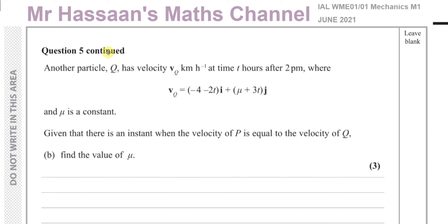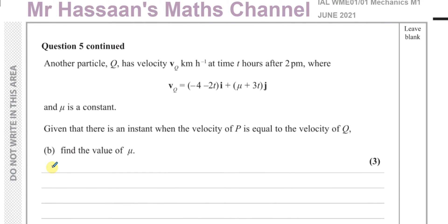Now for part B. It tells us another particle Q has velocity vQ kilometers per hour at time t hours after 2pm, where vQ is minus 4 minus 2t i plus mu plus 3t j, and mu is a constant. Given that there is an instant when the velocity of P equals the velocity of Q, find the value of mu. I'll write it as a column vector, minus 4 minus 2t for the i component, and mu plus 3t for the j component.